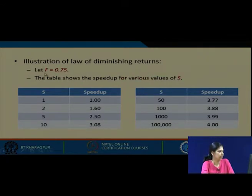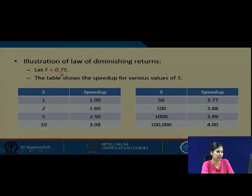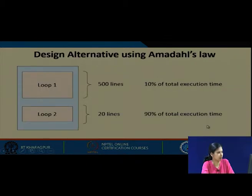Let us take another example where f = 0.75. This table also shows the speedup for various values of s and how it affects the overall speedup. When s is very large, such as 1 lakh, the speedup is 4, and the maximum achievable speedup when the fraction is 0.75 is also 4. Even if you increase s further, the speedup will remain the same.